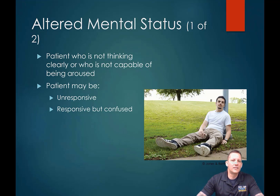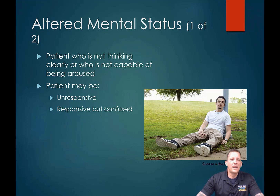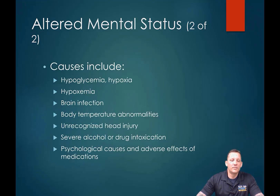The AEIOU-TIPS algorithm helps you determine what has caused this mentation to change from what you'd consider normal — whether it's a child or an adult. We all understand how people operate day-to-day, and if somebody falls outside that parameter, go through the algorithm to see if you can identify an external or intrinsic cause, and always try to find out what the patient's baseline is.